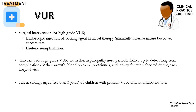Regarding VUR: vesicoureteric reflux has 5 grades. Surgical intervention is recommended for high grade VUR, that is grades 3 to 5. It can be in the form of endoscopic injection of a bulking agent as the initial therapy — this method is minimally invasive but has a low success rate. The second and definitive option is ureteric re-implantation, recommended for children with high grade VUR.